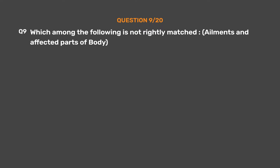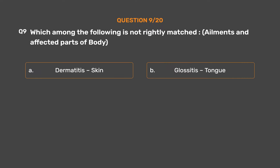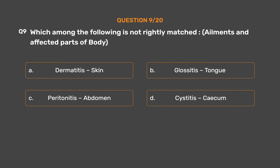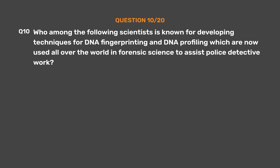Question number nine. Which among the following is not rightly matched — ailments and affected parts of body? Option A: Dermatitis — skin. Option B: Glossitis — tongue. Option C: Peritonitis — abdomen. Option D: Cystitis — cecum. The correct answer is Option D: Cystitis — cecum.